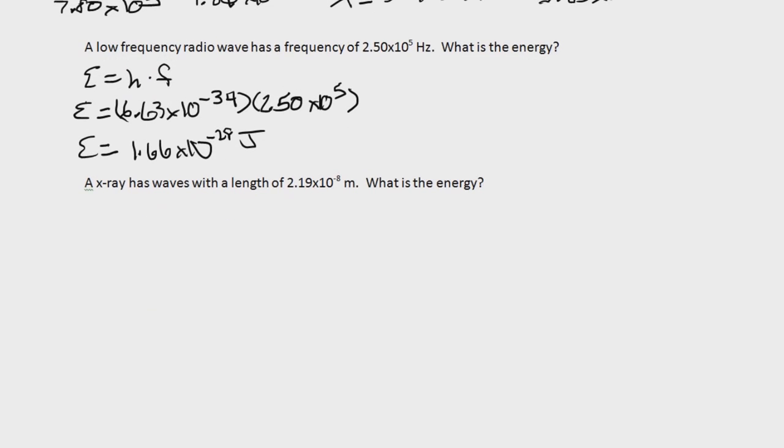Let's take a look at this last example here. It says an x-ray has waves with a length of 2.19 times 10 to the negative 8th meters. And what is the energy? So it's giving us something in meters. And as we know, meters measures wavelength. And now is wavelength and energy in the same equation? No, they're not. But let's see what we can do. Well, wavelength is in our first equation.